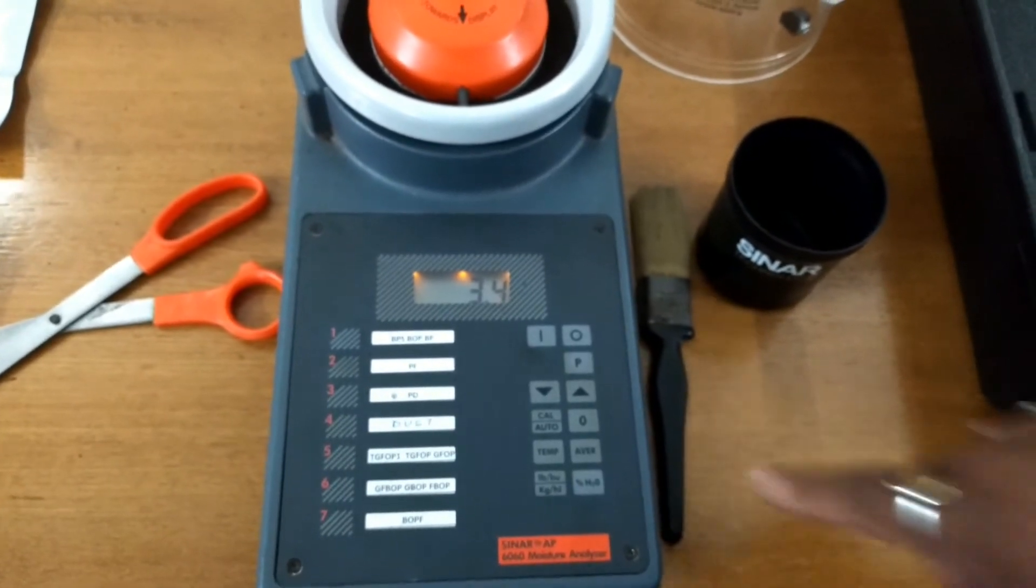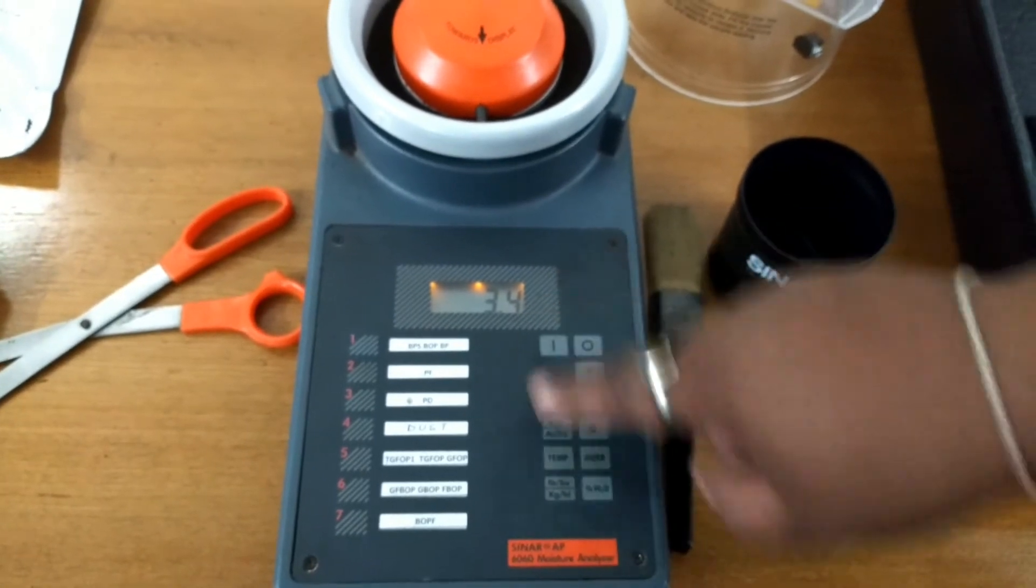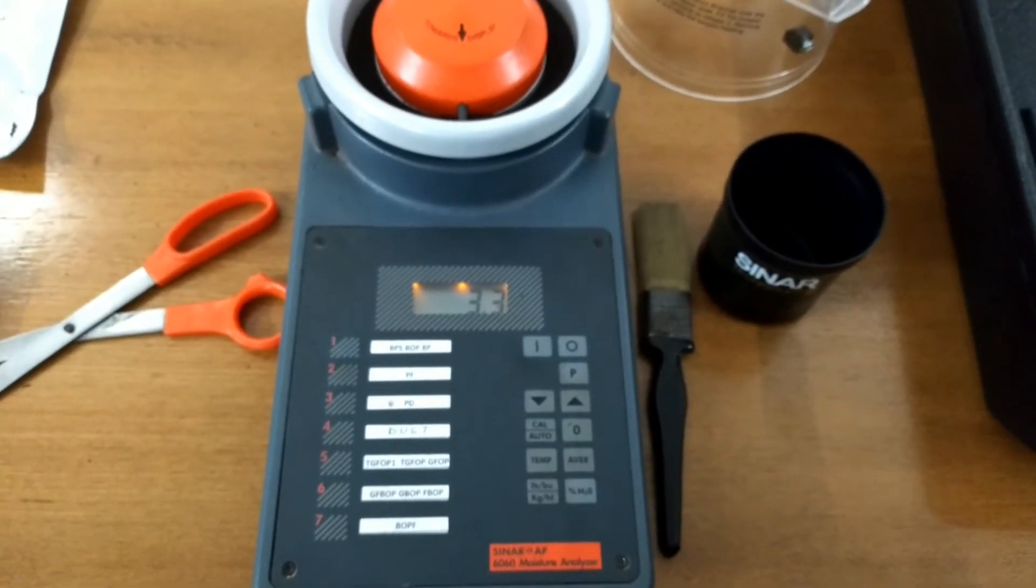It shows 3.4. I need to adjust to 3.3, so I adjust it by using these keys, the up and down keys. In this case, I have to reduce it, so I do 3.3.